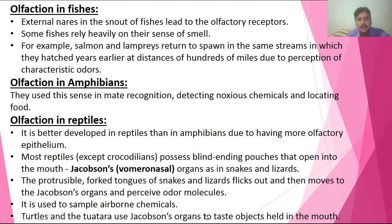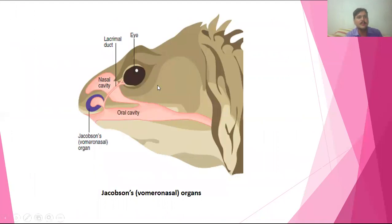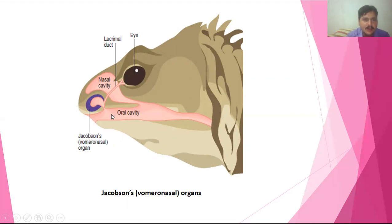In tuataras and turtles, Jacobson's organs are used to taste objects held in the mouth. Looking at the diagram, this is a chameleon lizard with its oral cavity shown. When the tongue comes back from the environment, it samples chemicals there — whether the snake is capable of eating a particular prey or not — and sends that sensation to the brain.